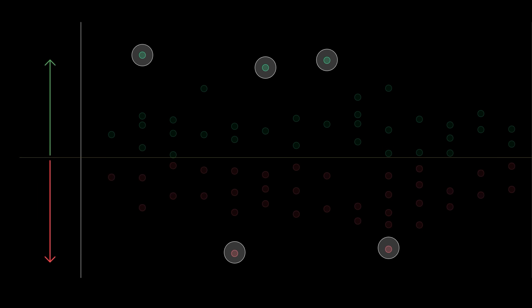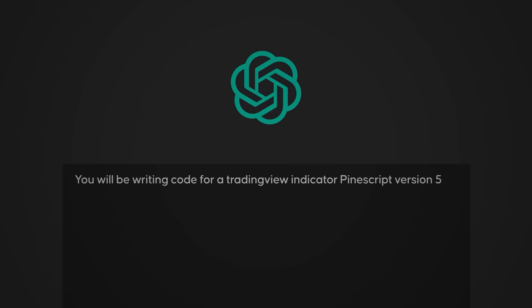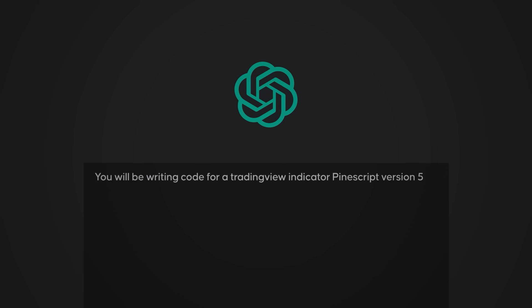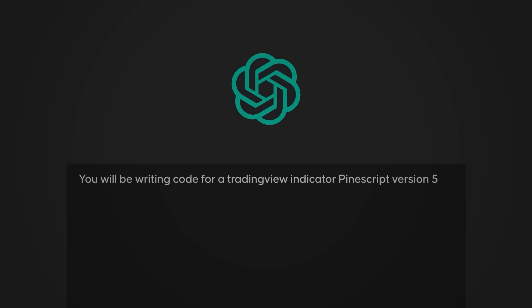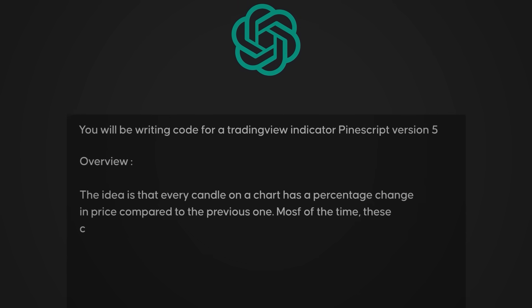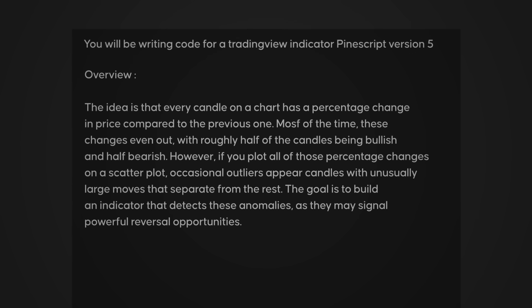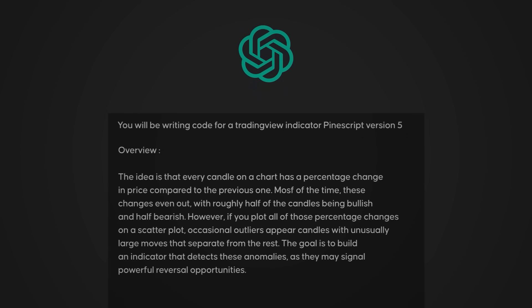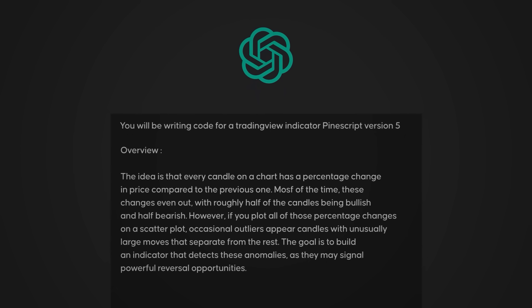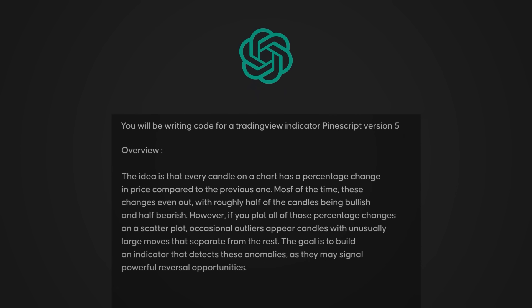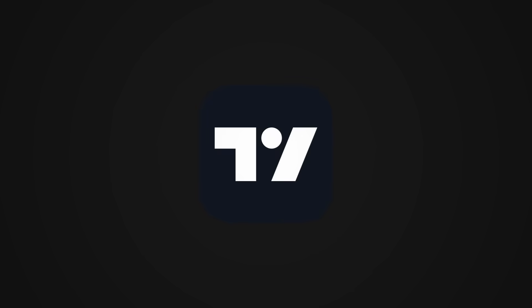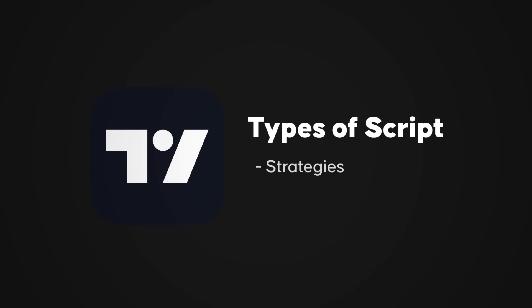So that's the overview of what we're building, and we'll feed this into our ChatGPT prompt. But we're not done yet. The next step is to specify the details of the indicator so the AI knows exactly how to construct it. This is where a little knowledge of TradingView comes in. On TradingView, there are two types of scripts: strategies and indicators.